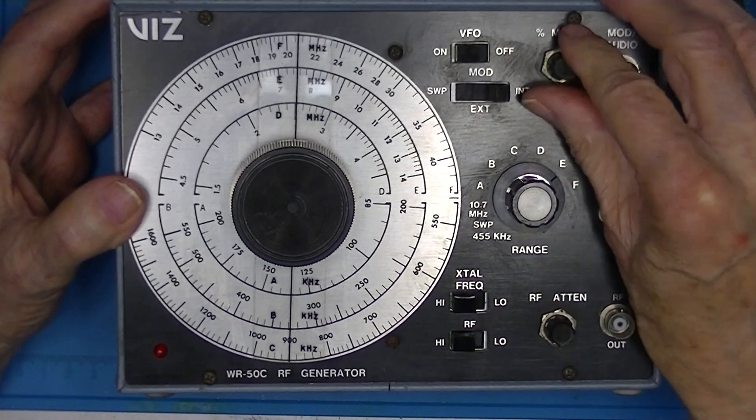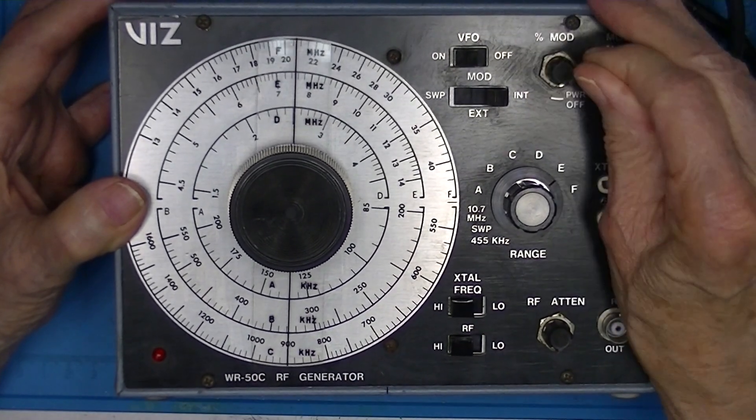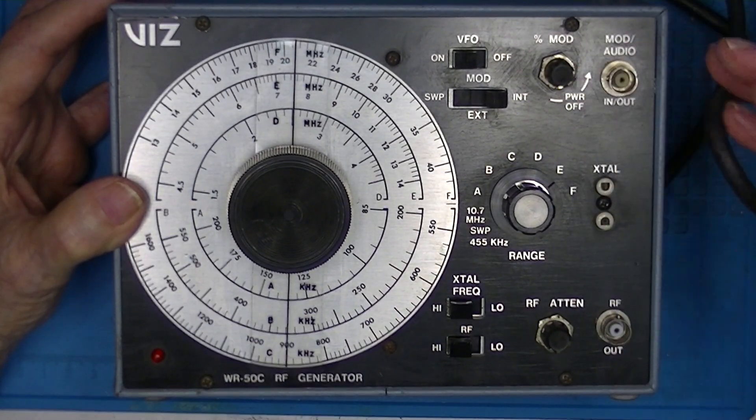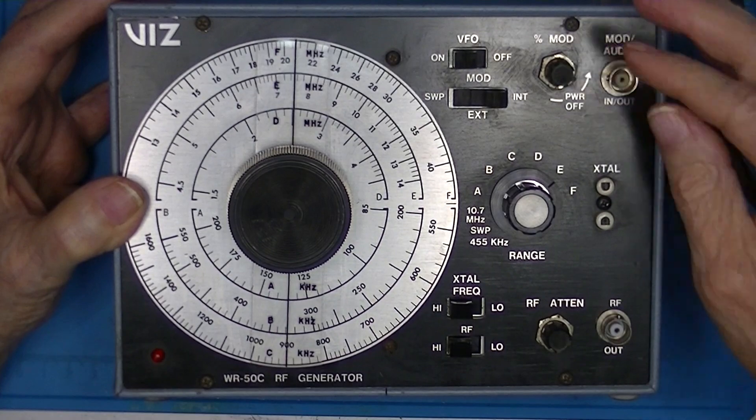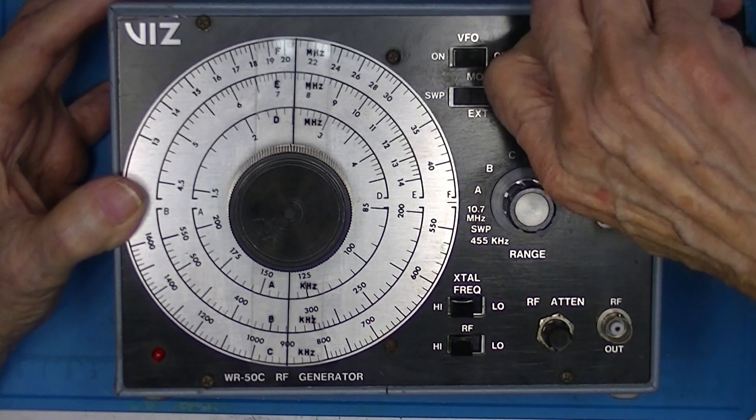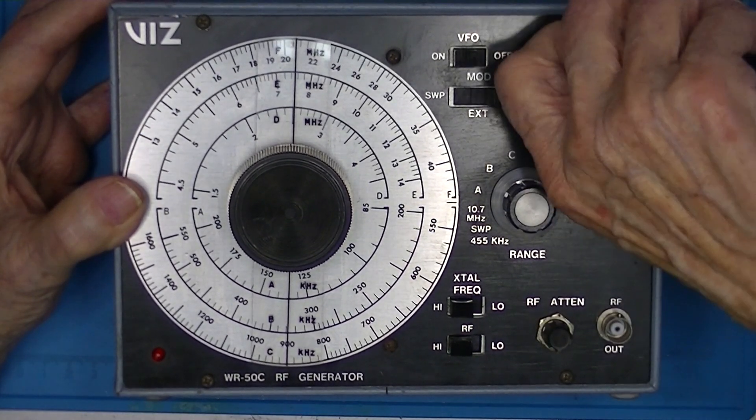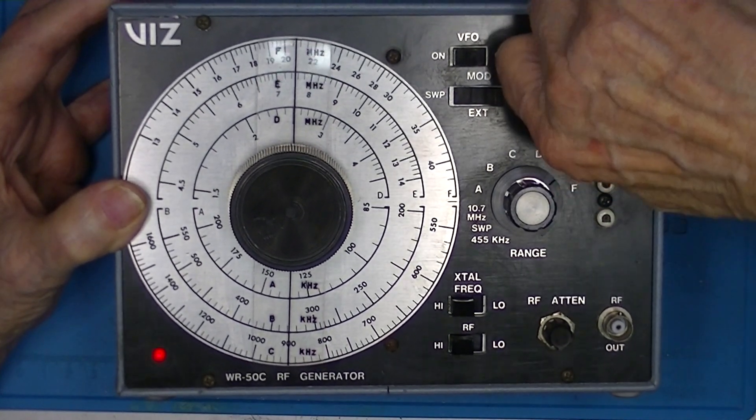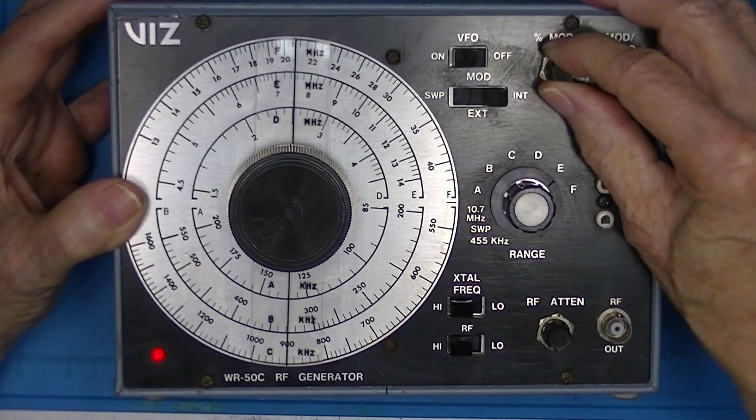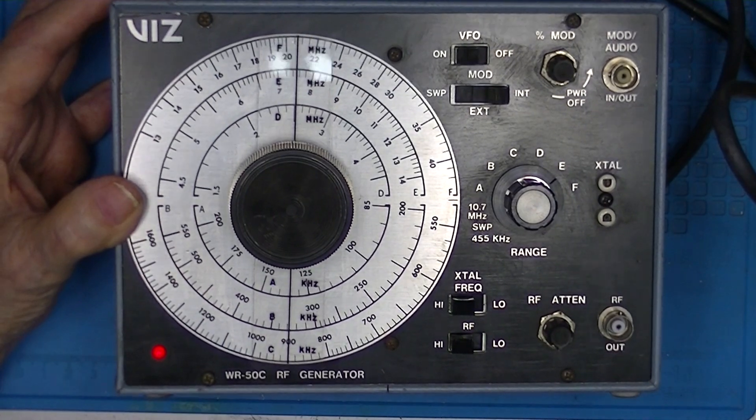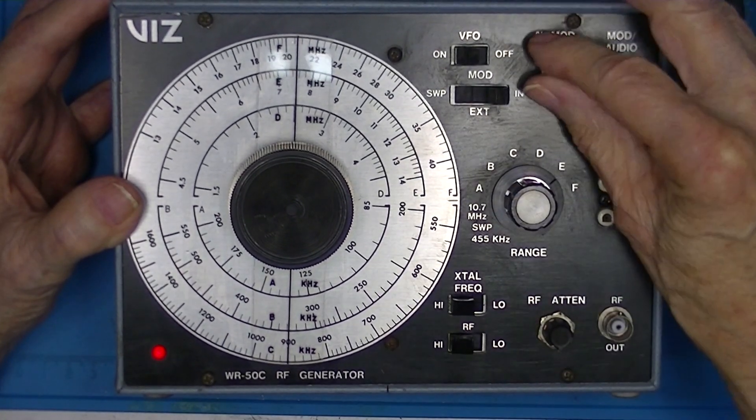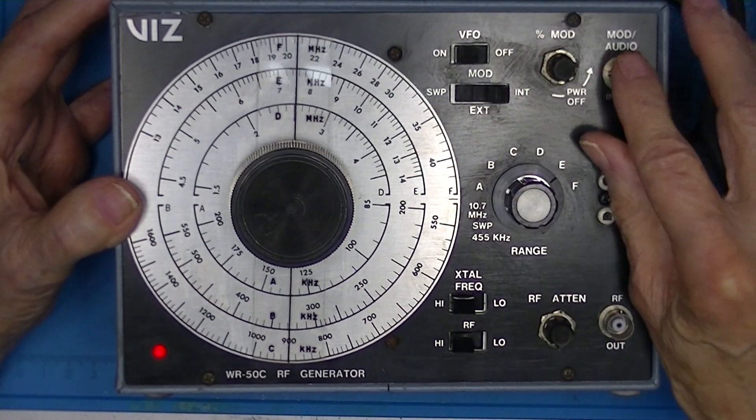One thing about RCA test equipment, it has these little rubber knobs that fit over the spline shaft. Once they get old, they tend to slide on the shaft. In any event, there's a 600 cycle audio output available here.